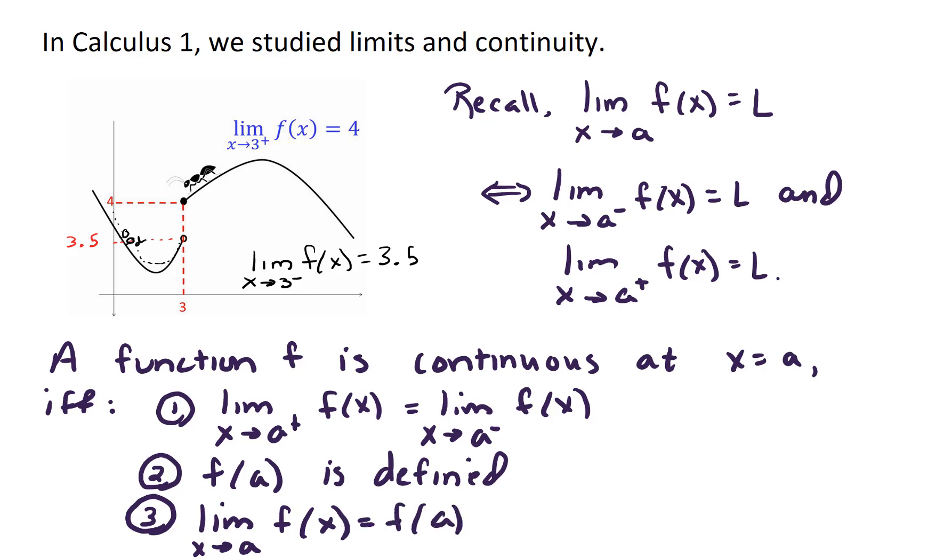So recall we can have all sorts of examples from Calc 1 where maybe the two-sided limit exists but the function is not defined, or maybe the two-sided limit exists and the function is defined but not equal to the limit. But what we're seeking is not only does the two-sided limit exist, the function is defined, but the value of the function is equal to that two-sided limit. So now our idea is to extend those ideas of limits and continuity for multivariable functions.